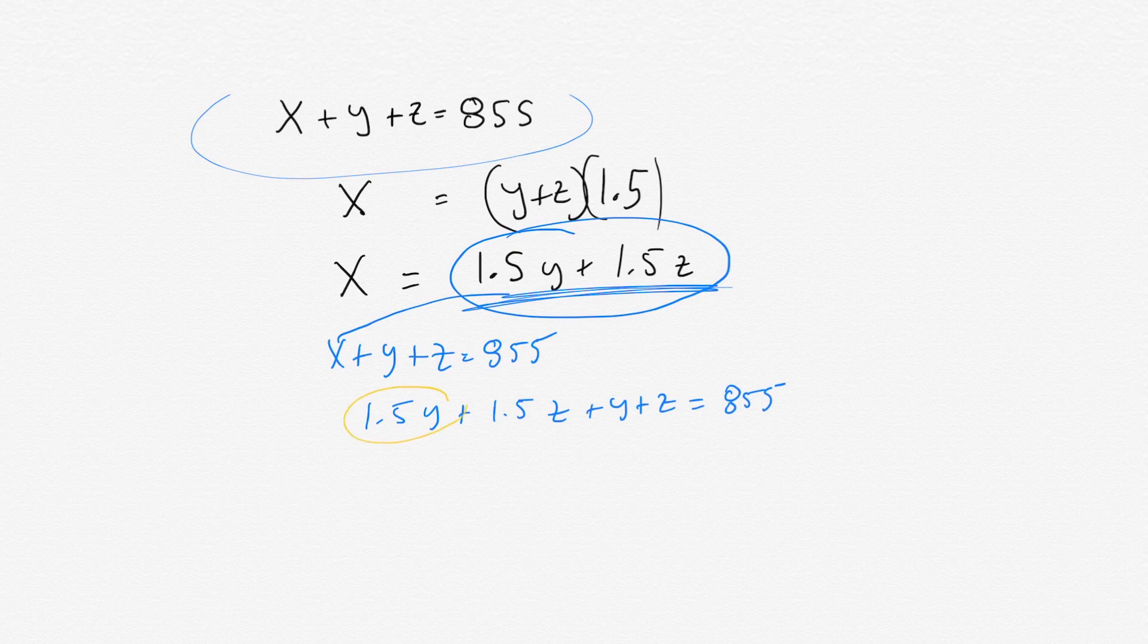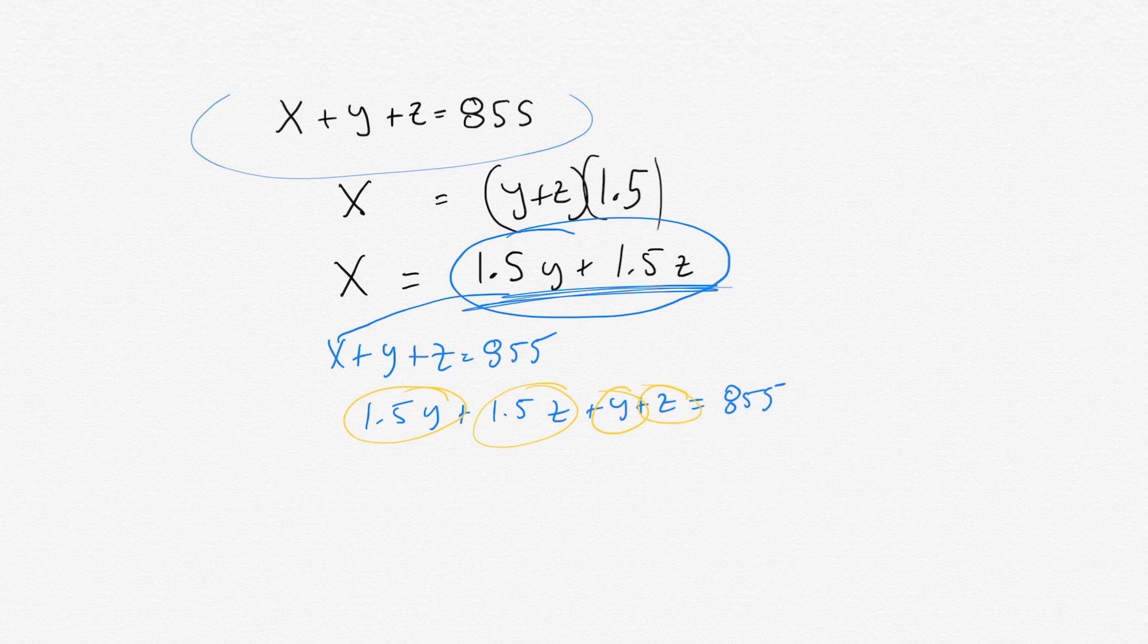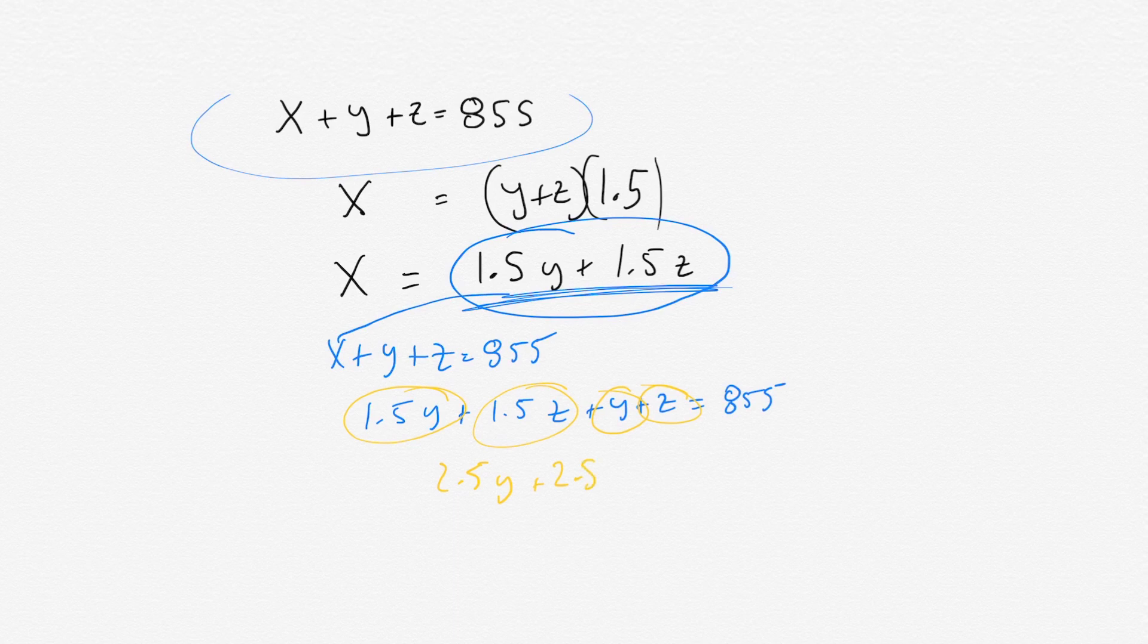And then as you can see, you could add the Y's together and then you could add the Z's together. So 1.5Y plus Y is 2.5Y plus 2.5Z because 1.5 plus 1 is 2.5 equals 855.